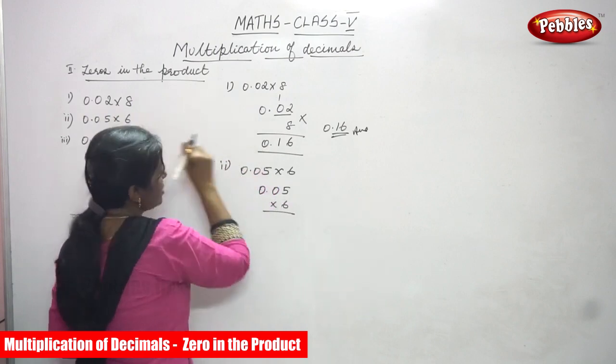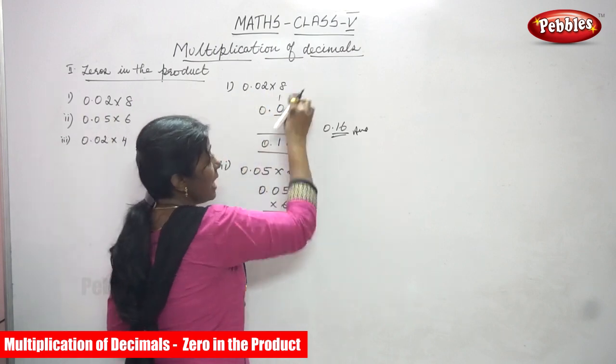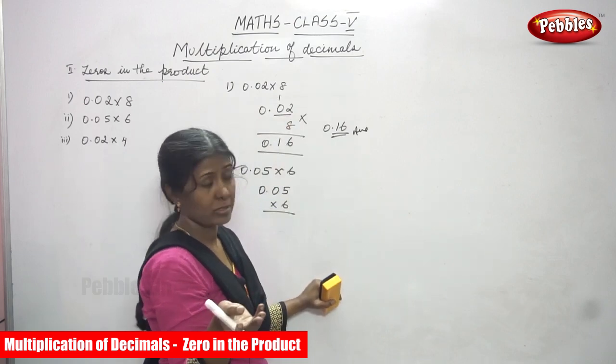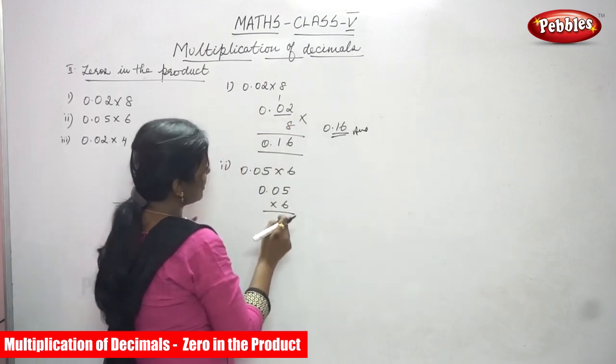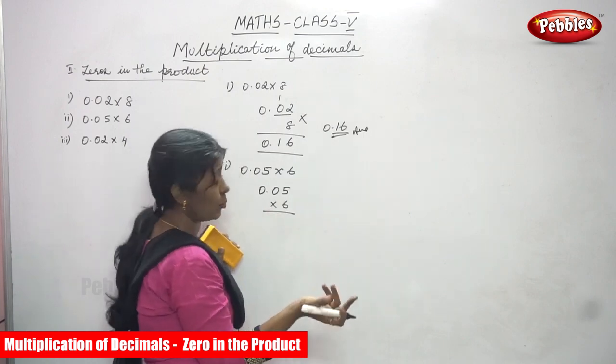So what is a product? First we have to multiply the two numbers. After that you can get the results. The result is called as a what? Product. So look at the sum. This product is also multiplication.